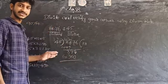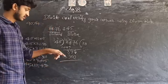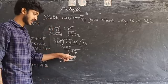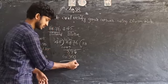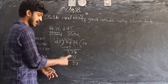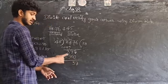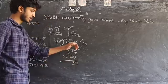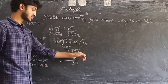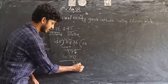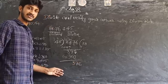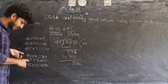Now I apply subtraction: 397 minus 360. 7 minus 0 is 7, 9 minus 6 is 3, 3 minus 3 is 0. I get 37. Now I bring down the next digit 6, making it 376.